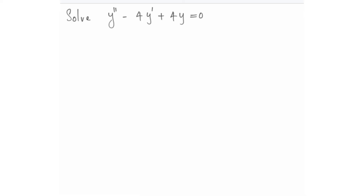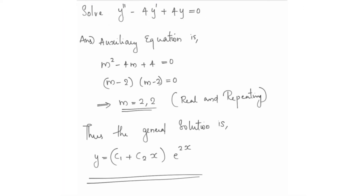Solve: y'' - 4y' + 4y equals 0. The auxiliary equation is m² - 4m + 4 equals 0. This is a quadratic equation.